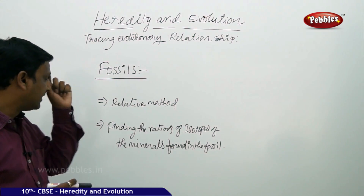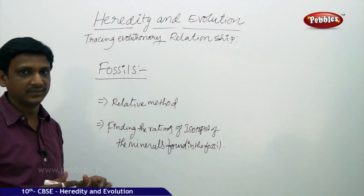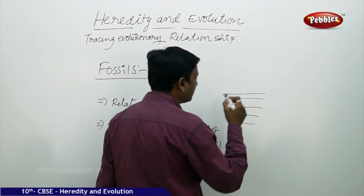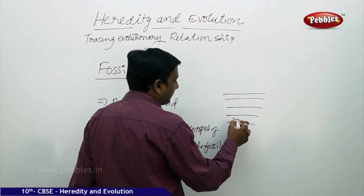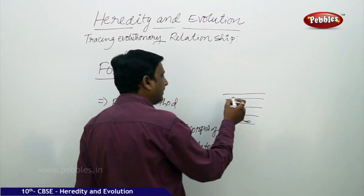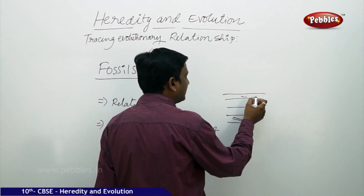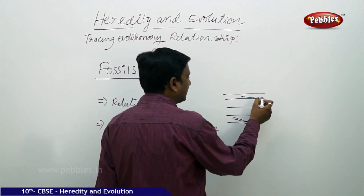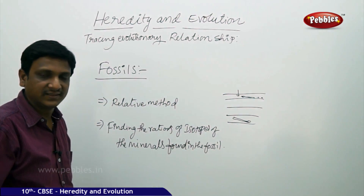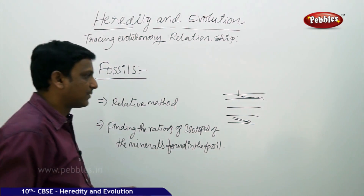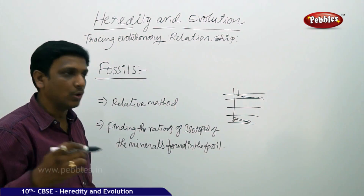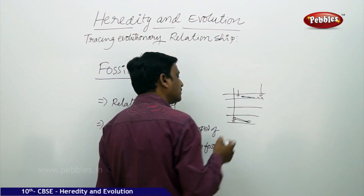How do they estimate the age of a fossil? There are two methods. One is the relative method. The relative method uses the layers of the earth — at which layer the fossil is found. For example, bones of dinosaurs are found in the bottom layers because they became extinct millions of years ago, while recently extinct animals like the Dodo are found in the top layers. The deeper the fossil, the older it is; fossils found near the top are more recent.